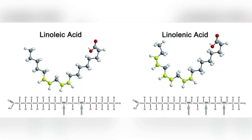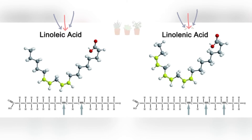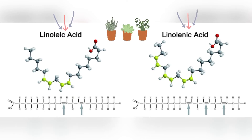In animal fats, there are two essential molecules: linoleic acid and linoleic acid. These essential fatty acids are polyunsaturated, which are mostly derived from plants.